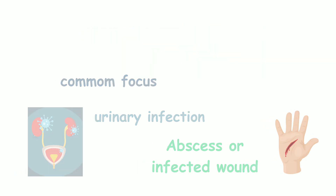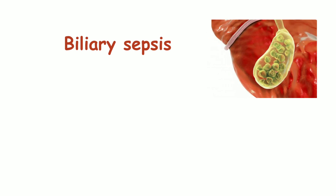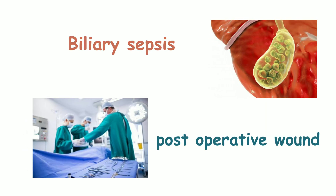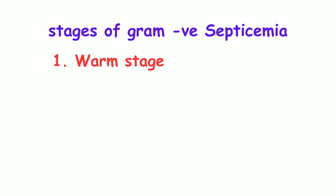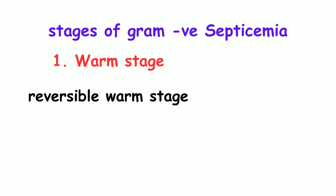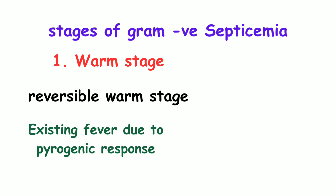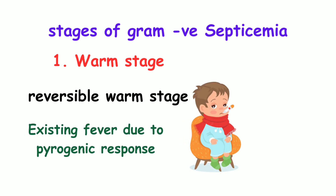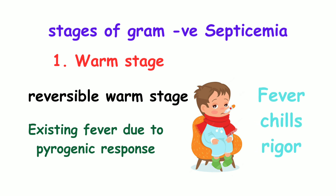Stages of Gram-negative septicemia: The first stage is the Warm stage. It is a reversible stage. The fever present is due to a pyrogenic response. In this initial reversible warm stage, the patient presents with fever, chills, and rigors.